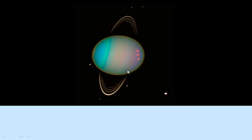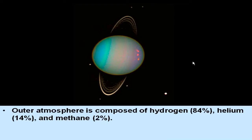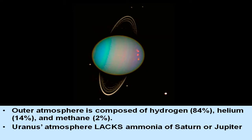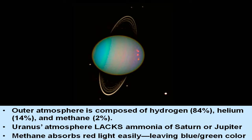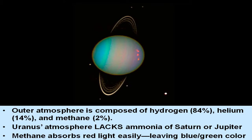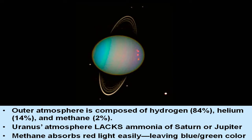All of the Jovians have rings. The outer atmosphere of Uranus is comprised of hydrogen at 84%, helium at 14%, and methane at 2%. Uranus' atmosphere lacks the ammonia of Saturn or Jupiter, so it doesn't have the brown ammonia hydrosulfide bands. The methane absorbs red light easily, leaving a bluish-green color — which is why Uranus, like Neptune, has this bluish-green hue.